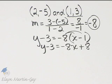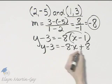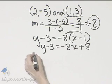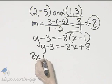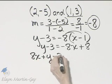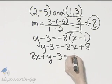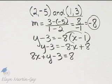Let's now write it in standard form. I'm going to add 8x to both sides, so I'll have 8x plus y minus 3, and if I add 8x to this side, I'm left with simply 8.